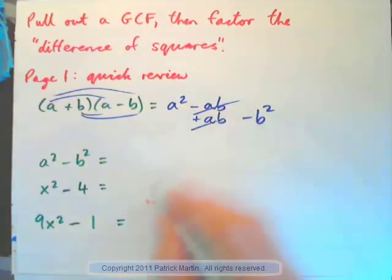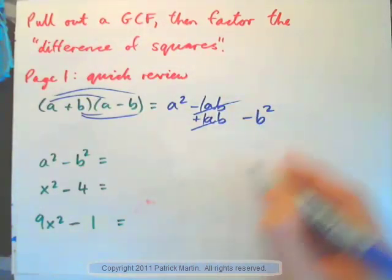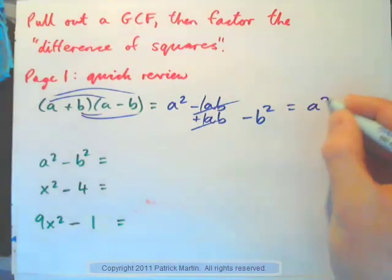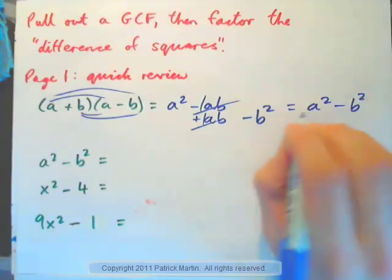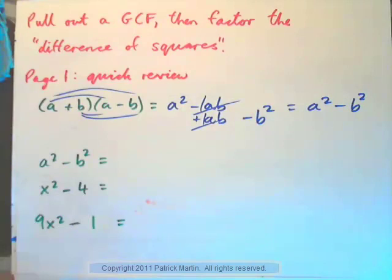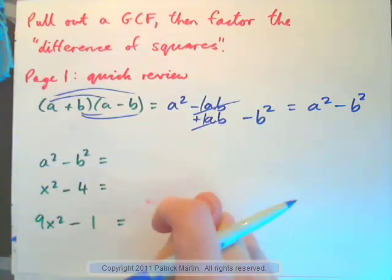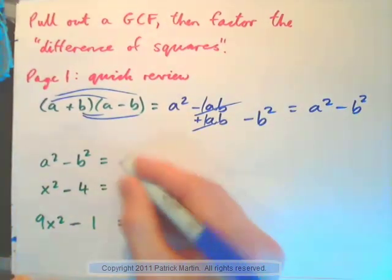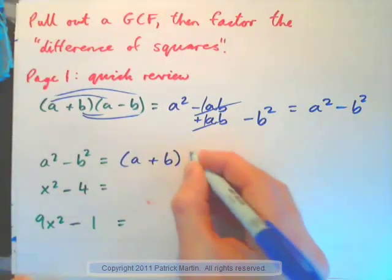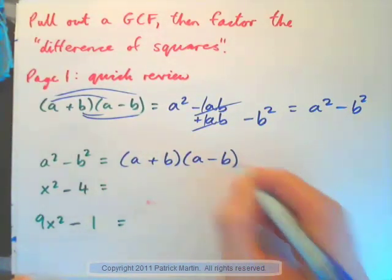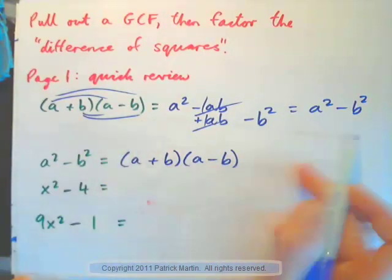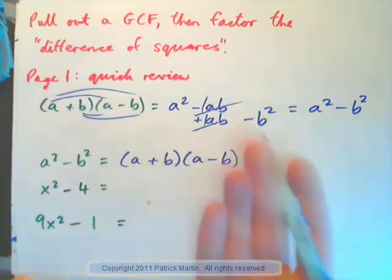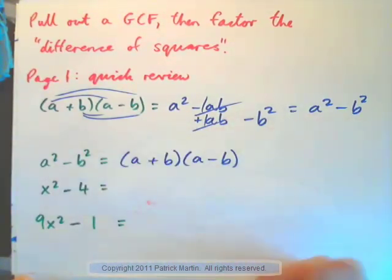These like terms add together to make zero, and the answer is A squared minus B squared. So we know that A squared minus B squared is A plus B times A minus B. How do we know that? Because we just checked it. This is just a fact that we discover and remember.